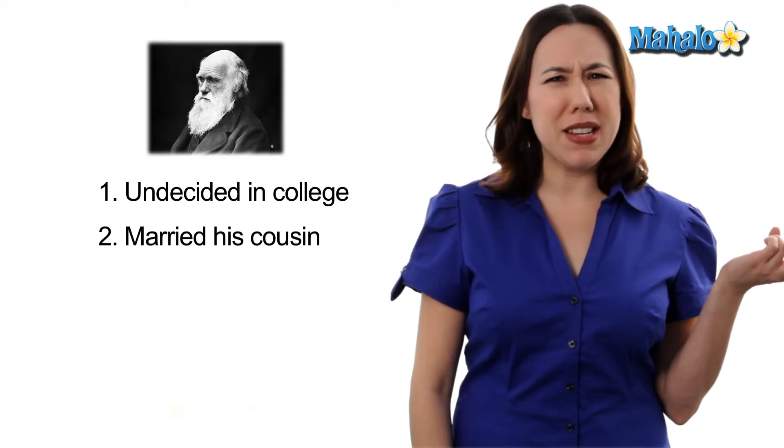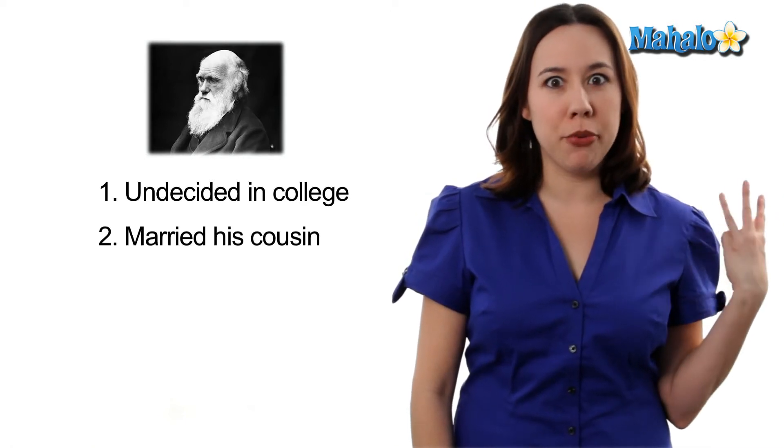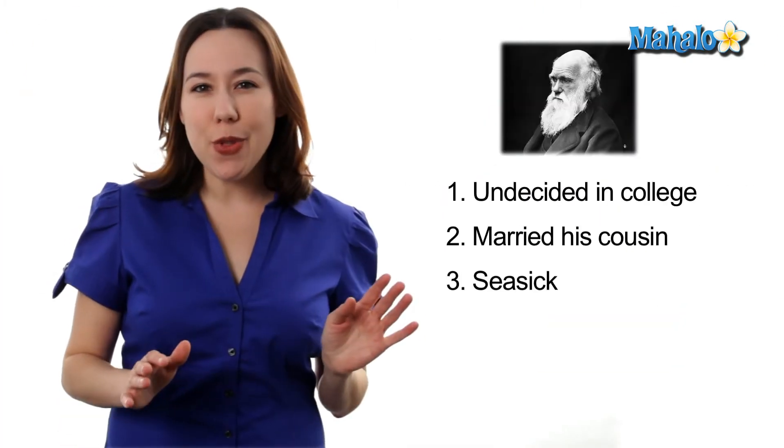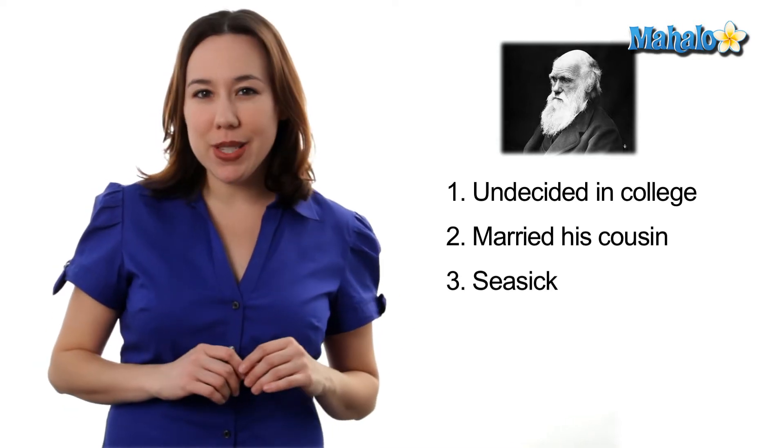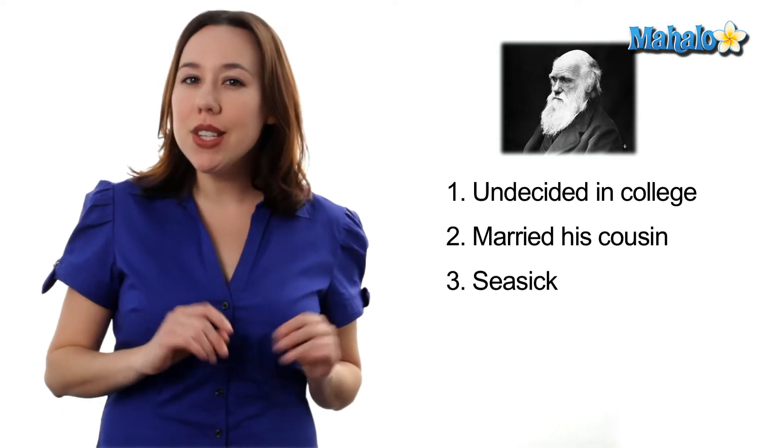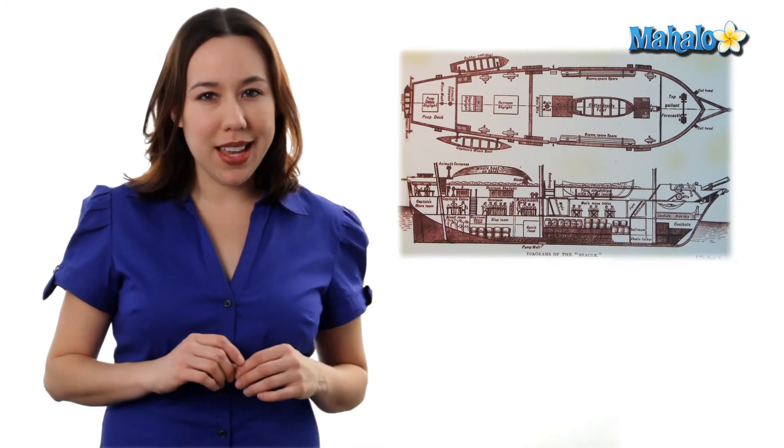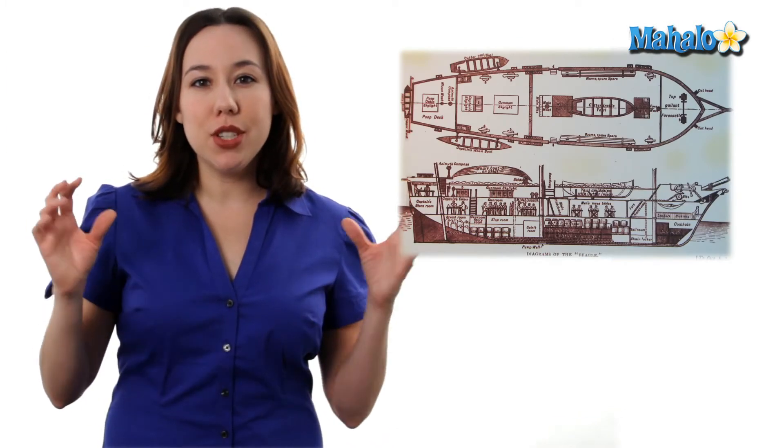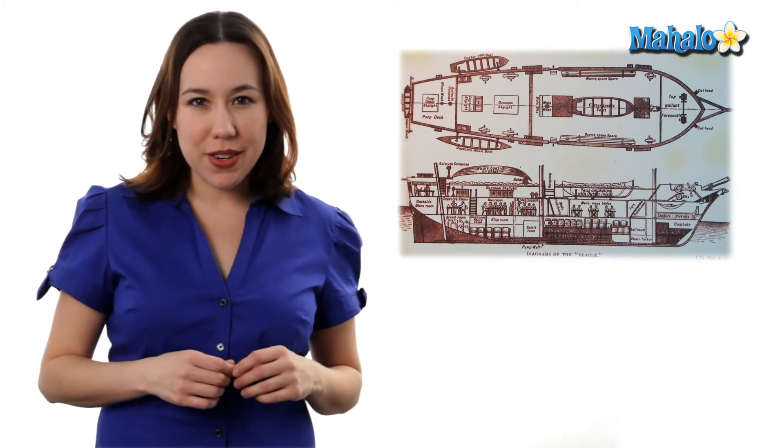Number 2. He married his first cousin. Let's jump to number 3. He was seasick for almost the entire 5 years he spent as a naturalist on the HMS Beagle. Now, in case you didn't know, his time on the HMS Beagle was where he was able to deduce and create his evolutionary theory.